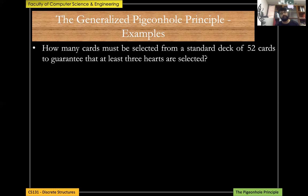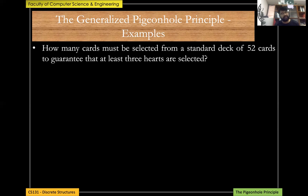For example, the first 13 cards are all spades, the next 13 are all diamonds, and the next 13 are all clubs — that's 39 cards with no hearts at all. With 39 cards selected, not a single heart has been chosen. After that, only hearts remain, so we add 3 to 39, giving 42 cards needed to guarantee at least three hearts.